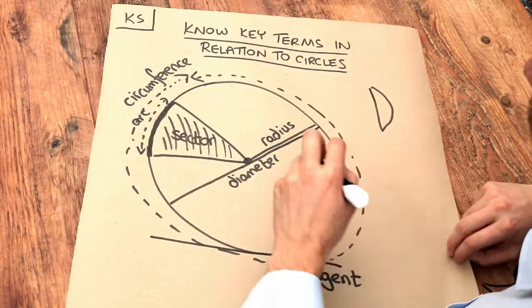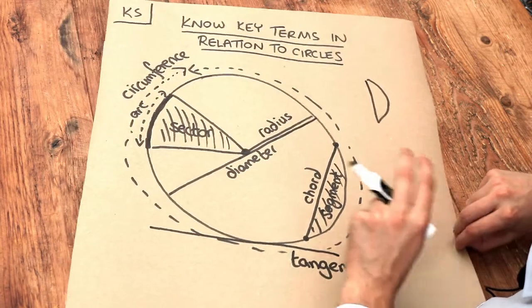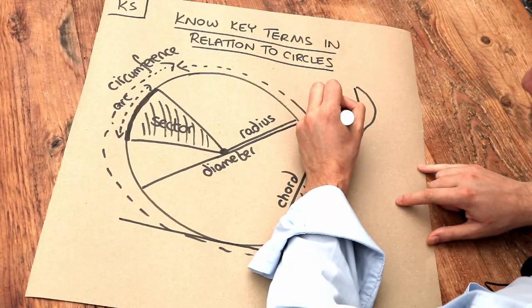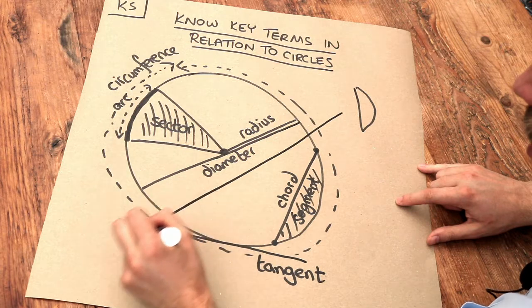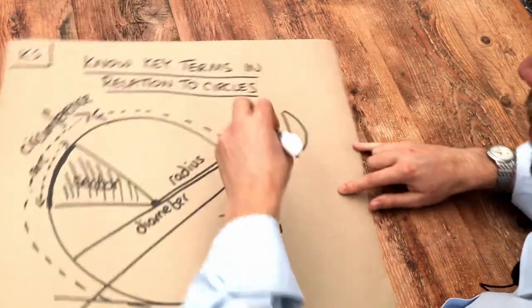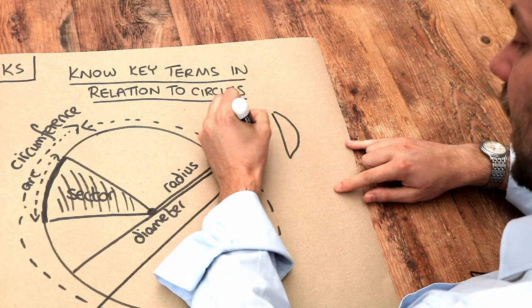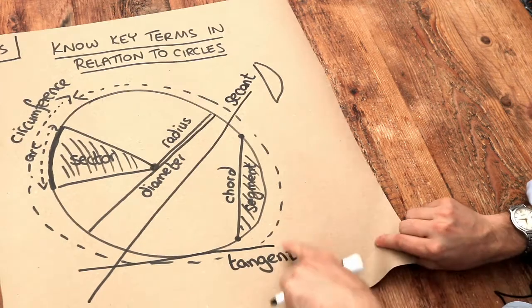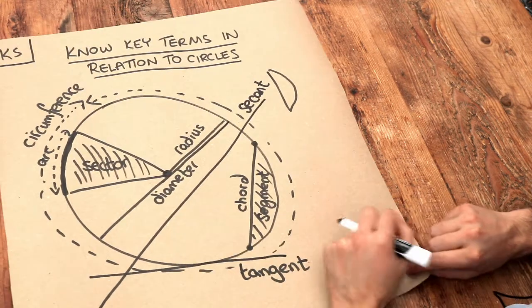And I'm just going to add one final word which is only used in Edexcel or IGCSE. If you have a line that cuts through the circle like that and is infinitely long, then that is known as a secant. So a secant is a line that goes through the circle, as opposed to a tangent which just touches the circle.